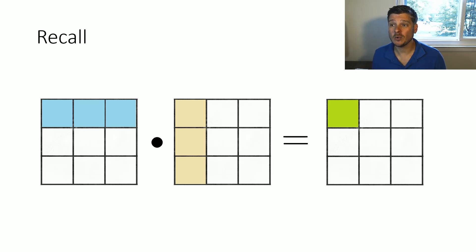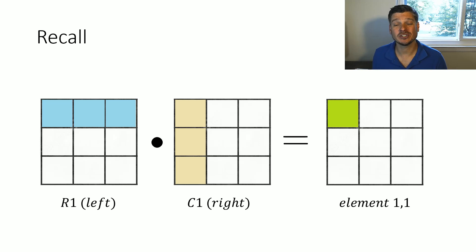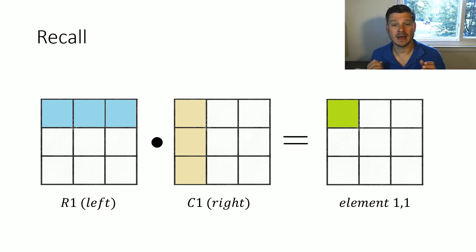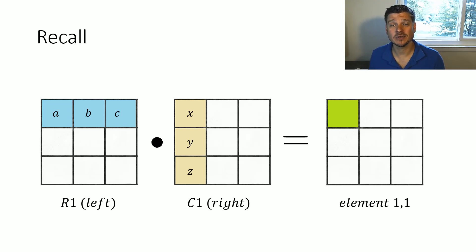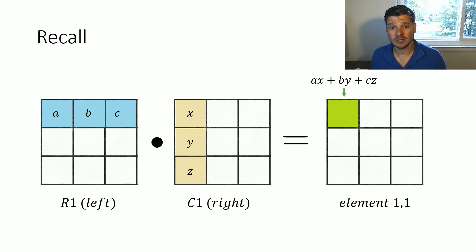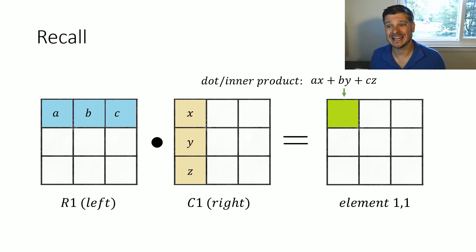When I multiply a three-by-three and a three-by-three, my result is also going to be a three-by-three. This is a really nice property of square matrices — if we multiply two square matrices with the same dimension, we know the resulting matrix is going to be that same size. Remember, it's going to be the row from the left times the column from the right matrix, and combining those gives us our entry in the resulting matrix. Using general variables, if my left matrix first row is a, b, c and my right matrix column is x, y, z, to find entry one-one we multiply each component: a times x, b times y, c times z, and sum them together. This is called our inner product or dot product.